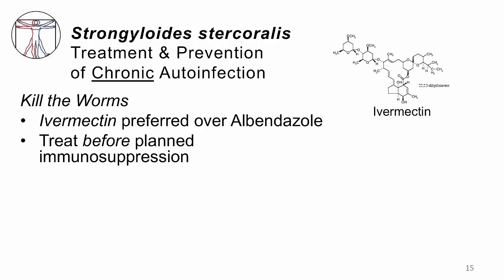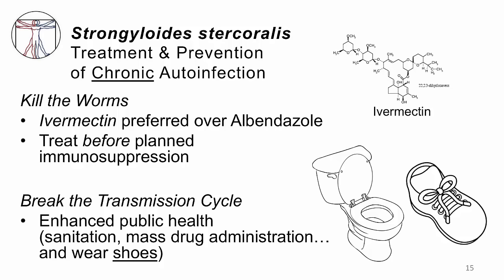How do we treat? Treatment and prevention for chronic auto-infection come the same way — kill those worms. Ivermectin is better than albendazole for chronic infection, for reasons we don't fully understand. The key is to make the diagnosis before you immunosuppress the patient so you can get rid of their worm load and prevent hyperinfection. And of course, break the transmission cycle — better public health, good sanitation, periodically giving doses of ivermectin to villages, and giving people good shoe gear.